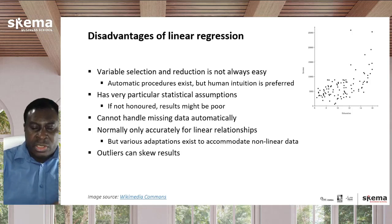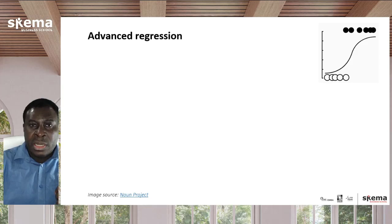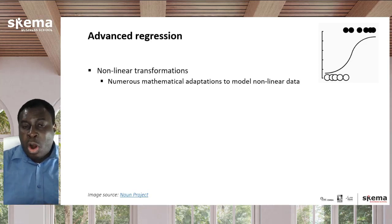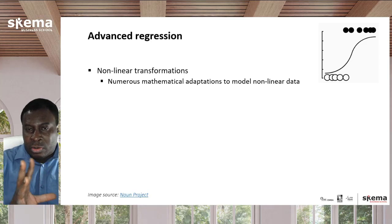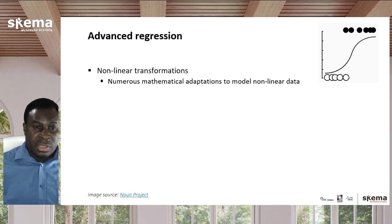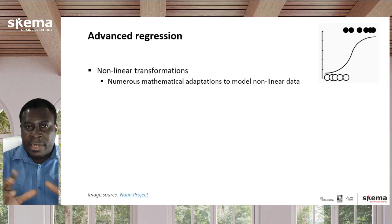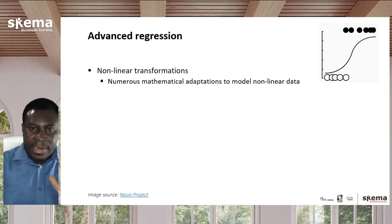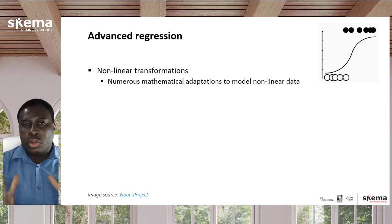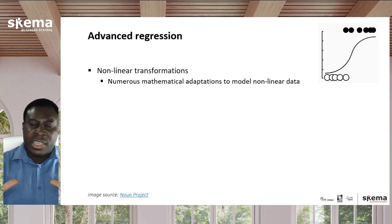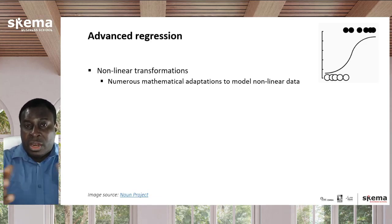To meet some of these shortcomings, there are some advanced approaches to regression and also to respond to other machine learning needs. First, there are nonlinear transformations — once a relationship is no longer linear, it's no longer linear regression. But there are various types such as Poisson regression and Tobit regression that adapt to different distributions of data where a straight line would not match. There are also quadratic equations and a whole set of mathematical transformations that can be done to meet nonlinear scenarios.